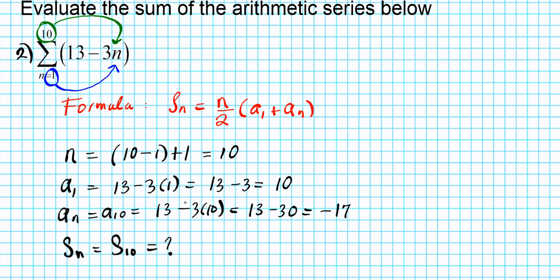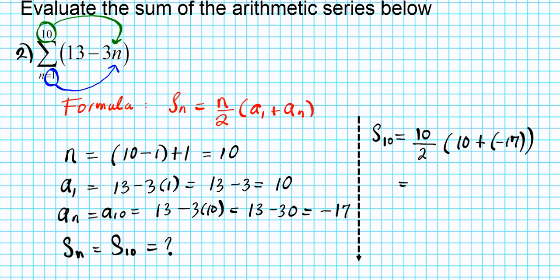Now that we have our knowns and one unknown, we're ready to compute the sum. S sub 10 equals n over 2 times (a1 plus a sub n), which is 10 over 2 times (10 plus negative 17). Ten over two is five. Ten plus negative 17 is negative 7. So we have 5 times negative 7, and the sum of the arithmetic series is negative 35.